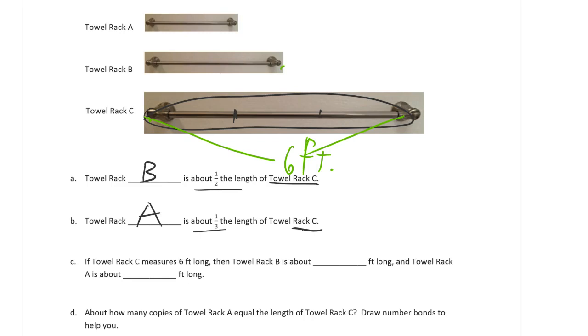So half of, so towel rack B would have to be half of six, so that would be at three. Towel rack B would be about three feet long. And towel rack A would have to be, well, it's less than three.